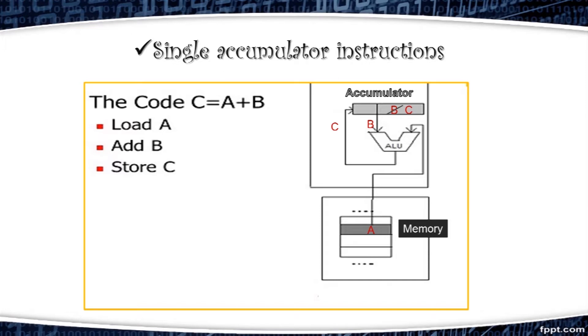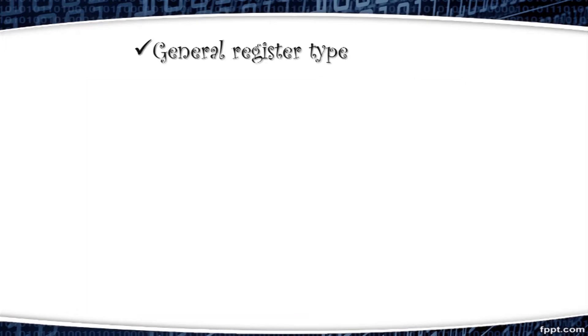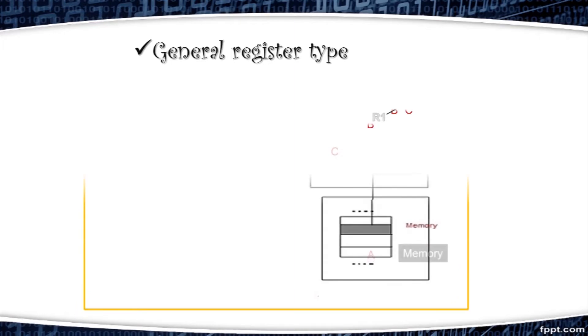So, this instruction adds two operands A and B and stores result in AC. All arithmetic, logic, load and store instructions use the accumulator register. Next is general register type.